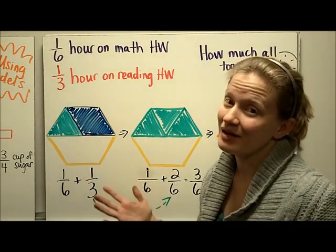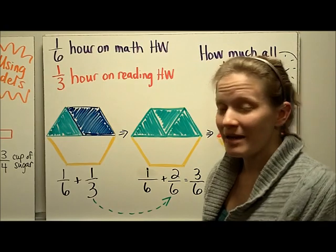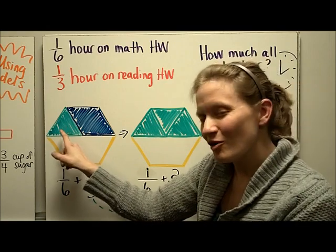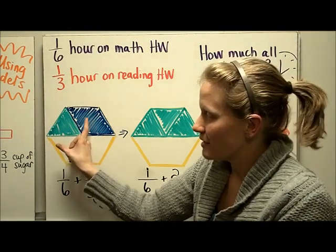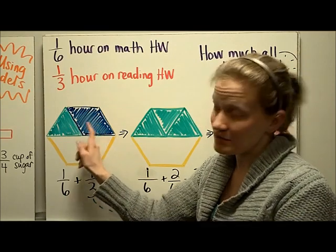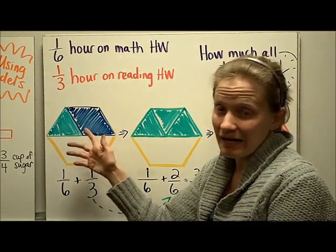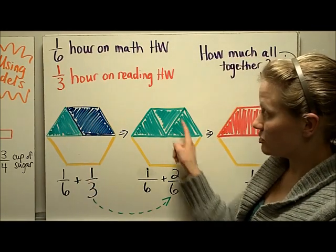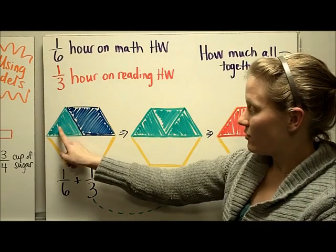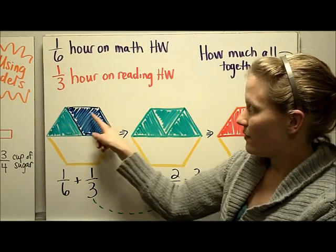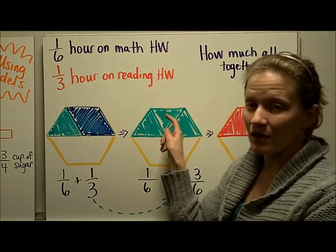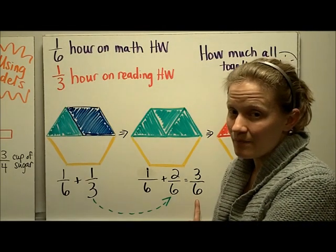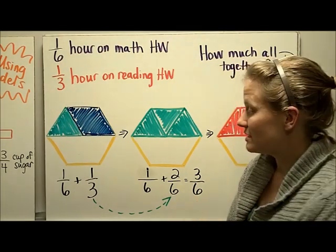Now we can't add them yet because they're not the same denominator. So we want to make an exchange so that they're both the same color piece or have the same denominator. I can't make this one blue because it's too small — the blue piece is bigger than that — so I'm going to think about could I make both of these green. I can make an exchange for the one-third piece, turning it into two-sixths or two green triangles. Now I have the one-sixth here and the one-third shown with the two-sixths. When I add one-sixth plus two-sixths, the answer is three-sixths.